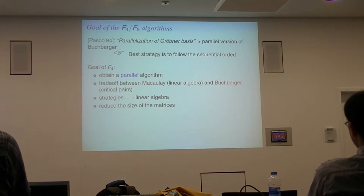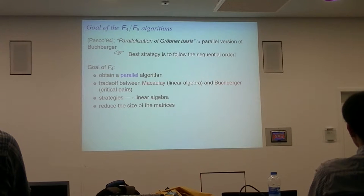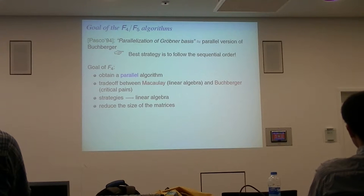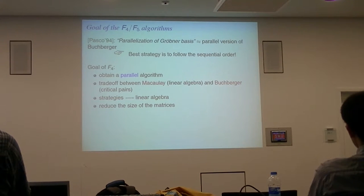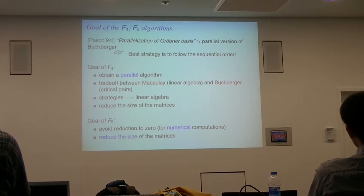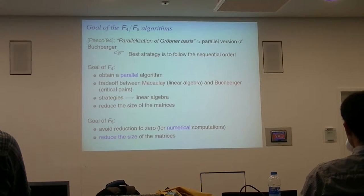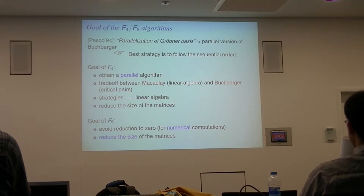One surprising effect of this algorithm is that it was more efficient even in the sequential case. Even if the motivation was to obtain a parallel algorithm, we obtained an algorithm which was able to reduce the size of the generated matrix. The goal of the F5 algorithm was simply to avoid this useless computation, and one motivation at the time was to be able to perform numerical computation. Again, the effect of this algorithm is to reduce the size of the matrix.